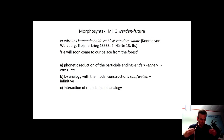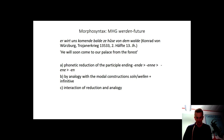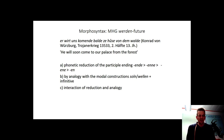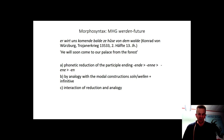The origins of werden plus infinitive are disputed. In Old High German it occurs very rarely; in Middle High German even more rarely than werden plus present participle, like in 'er wird uns kommende balde zu Hause von dem Walde' from Konrad von Würzburg's Troy and War. Therefore, it is usually assumed that the construction werden plus infinitive came from the construction werden plus present participle. There are several possible explanations for the emergence of the future periphery: phonetic reduction of the participle ending, analogy with the modal peripheries soll and will plus infinitive, or interaction of reduction and analogy.